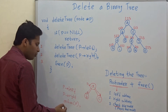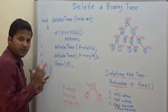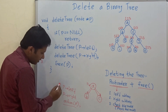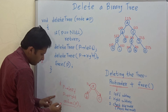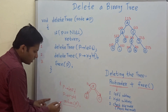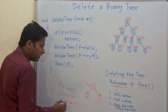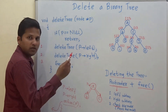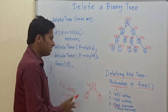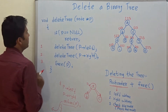You have to perform the action at the end, while leaving the node. After we are done with the left and right subtrees, we leave that node — we leave the function call. So when we leave the node, you perform some action. That is the post-order traversal. So let us see how to delete the binary tree.